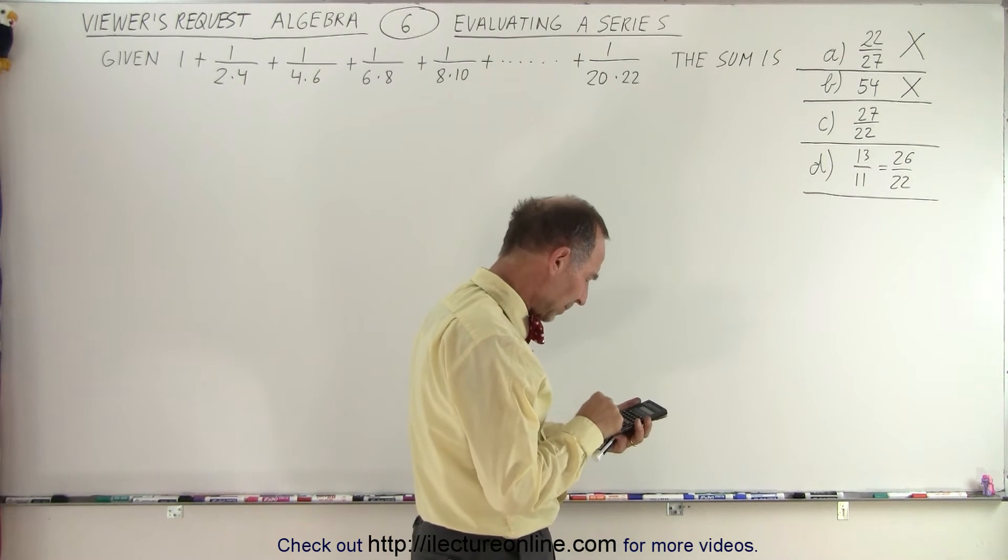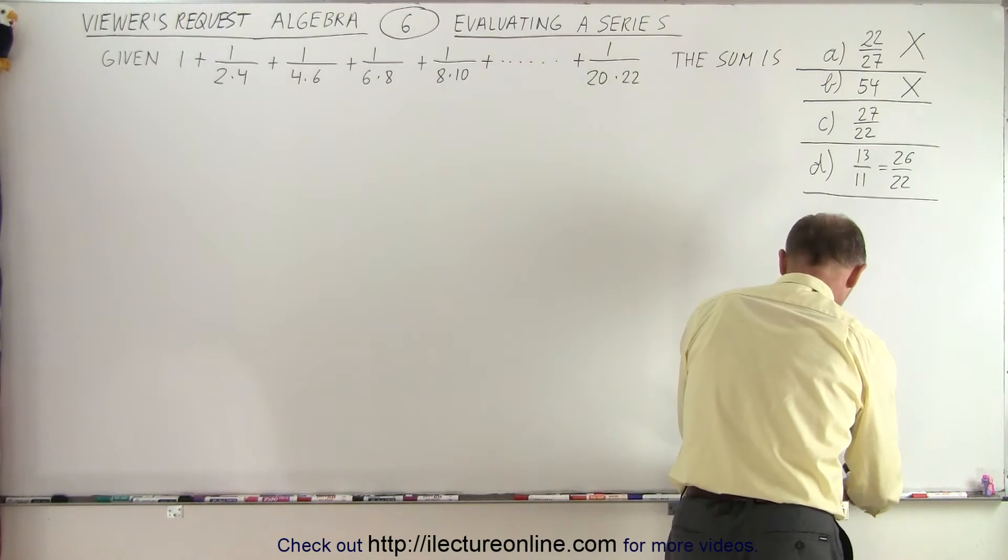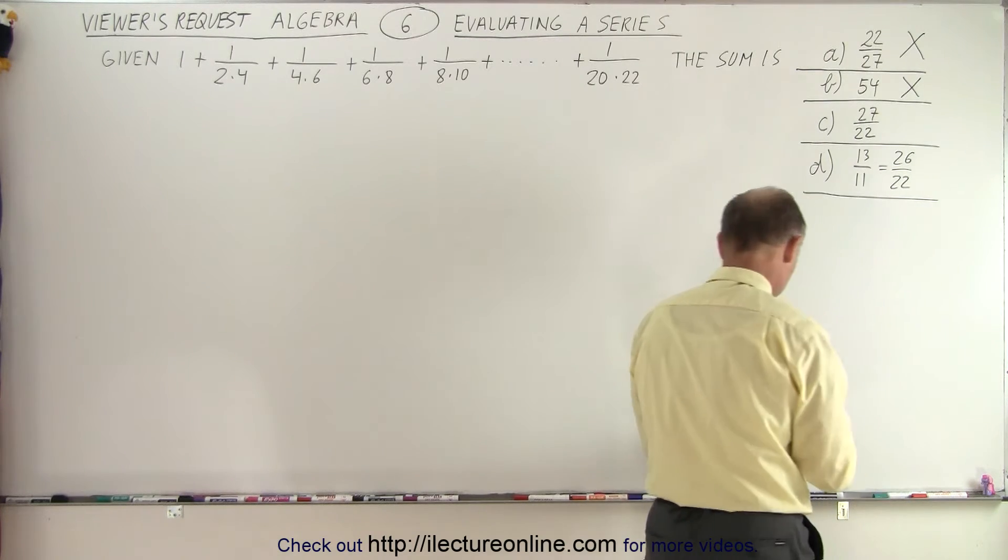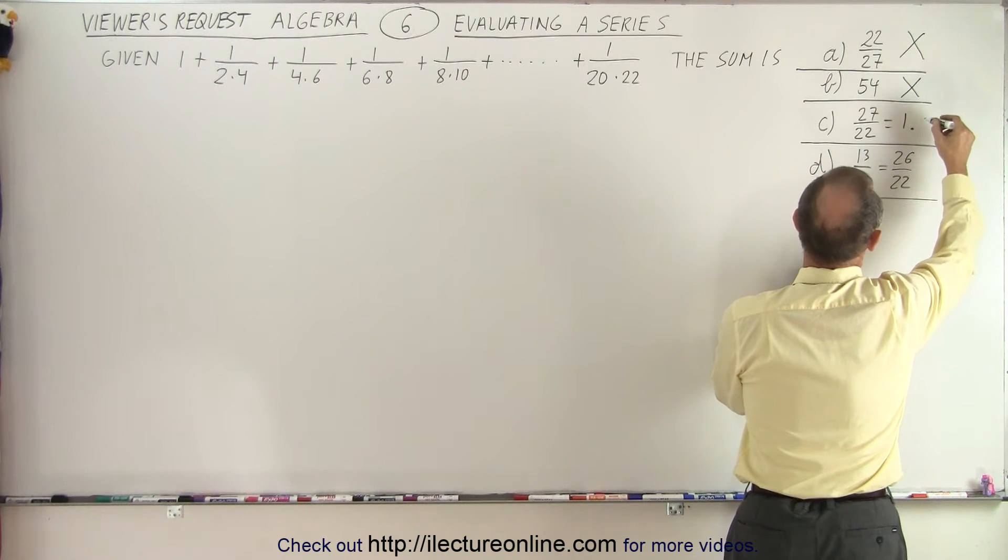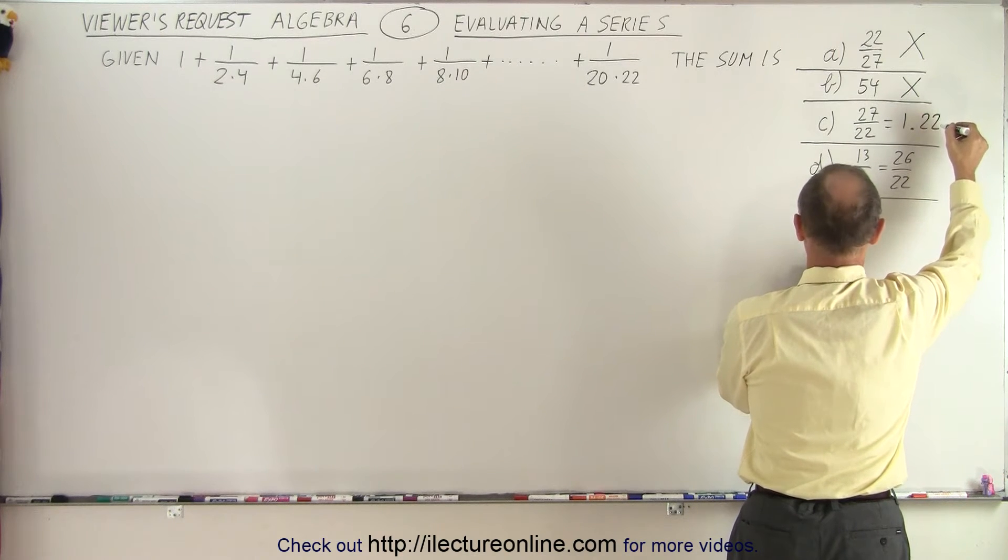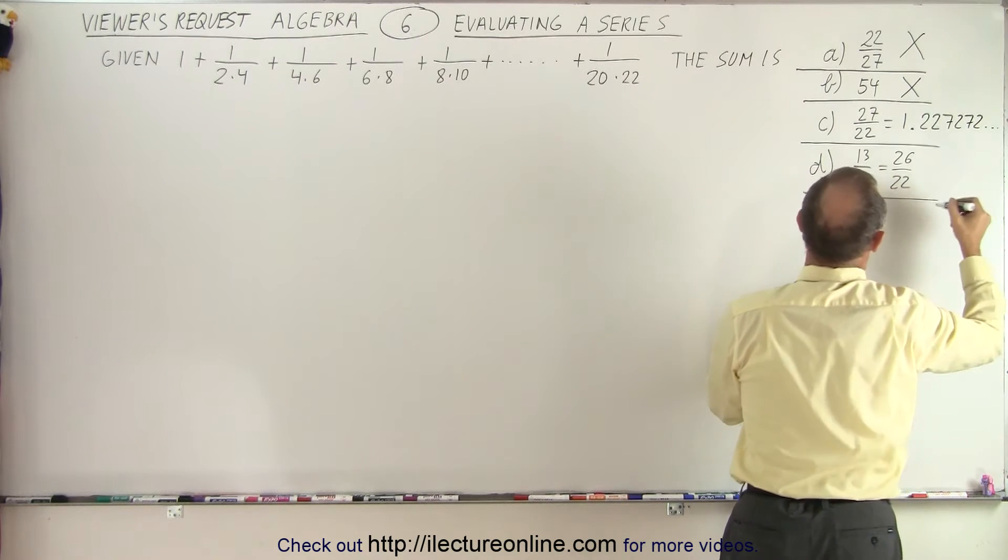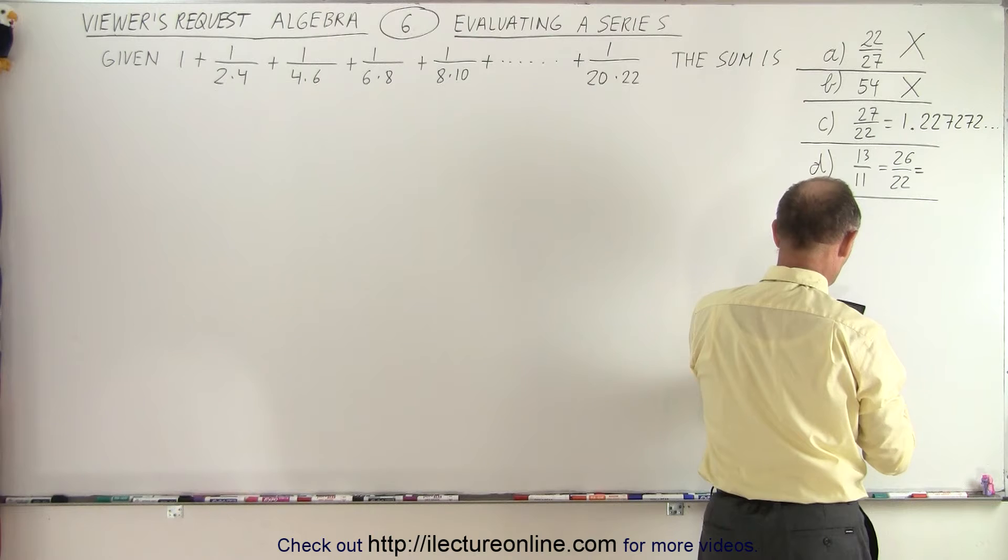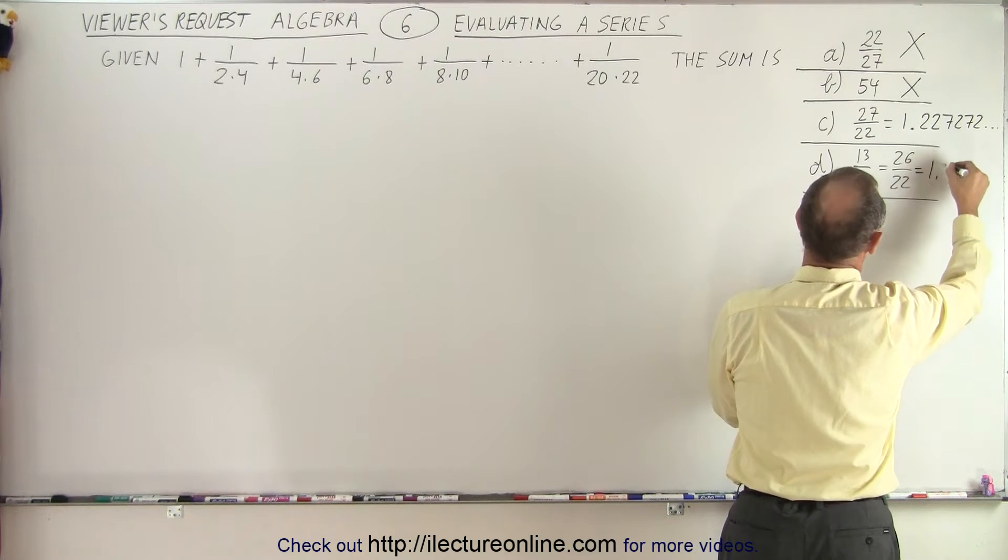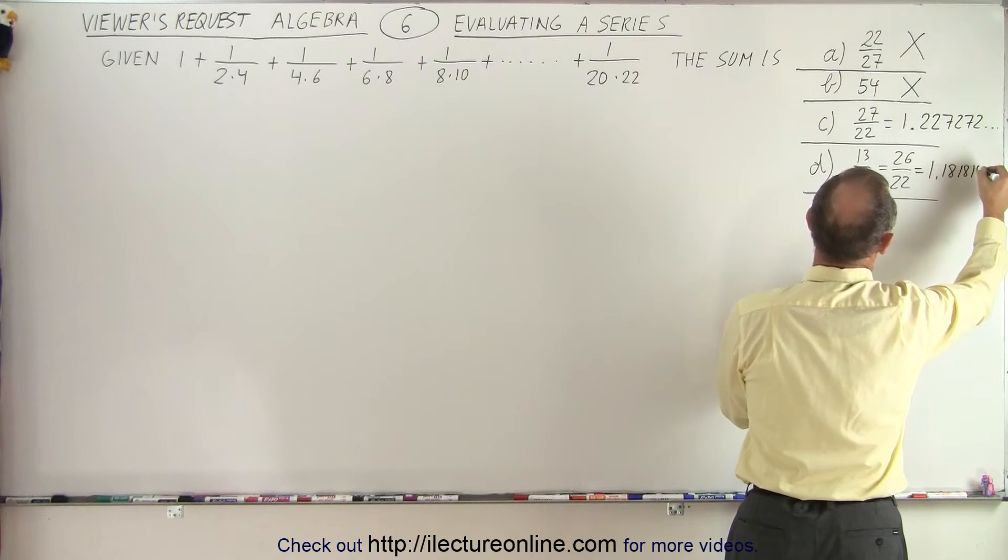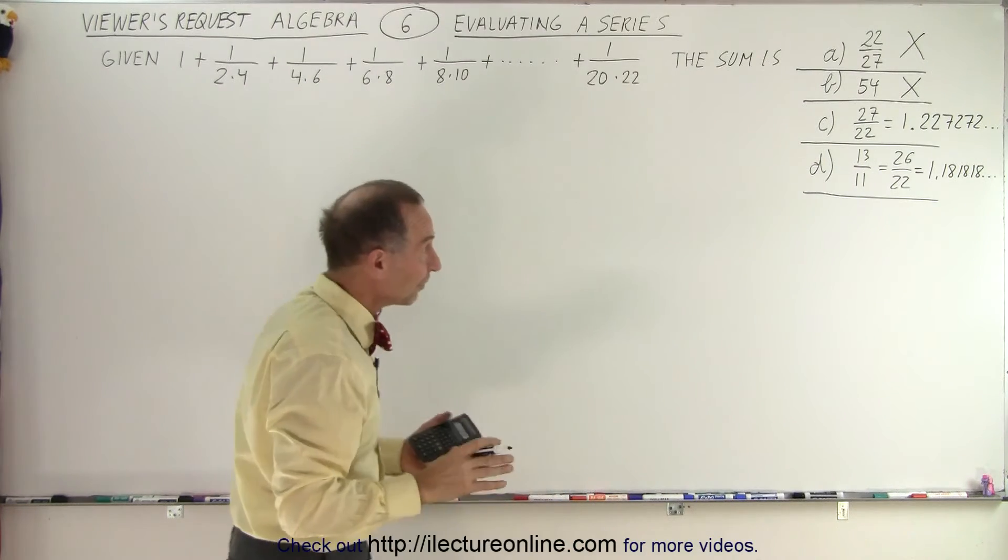So 27 divided by 22 is equal to 1.227272, and so on. And 26 divided by 22 is equal to 1.181818, and so forth. All right. So they are significantly different.